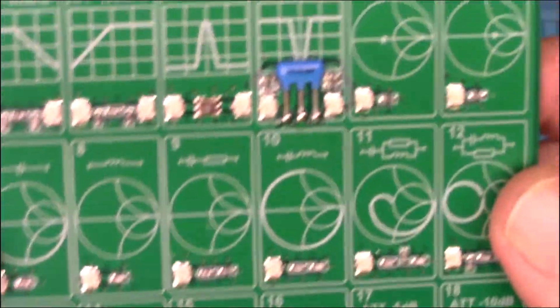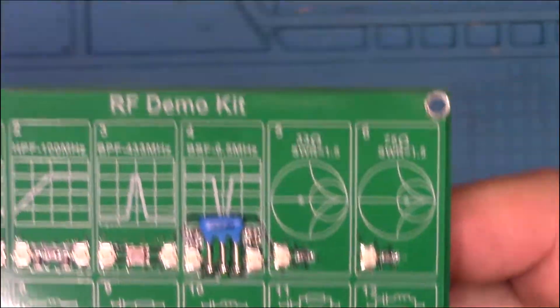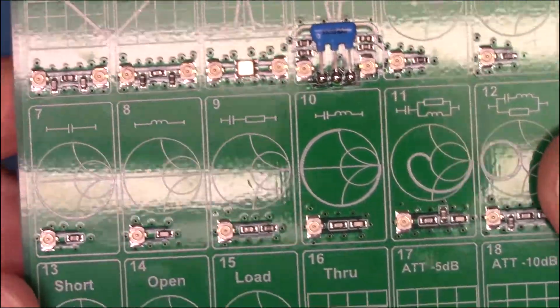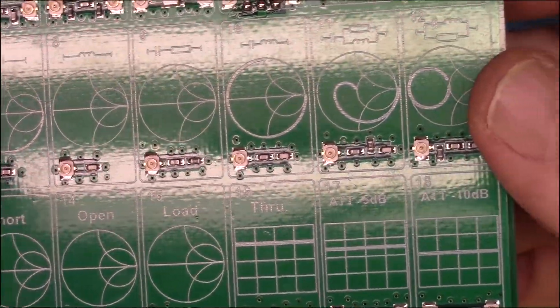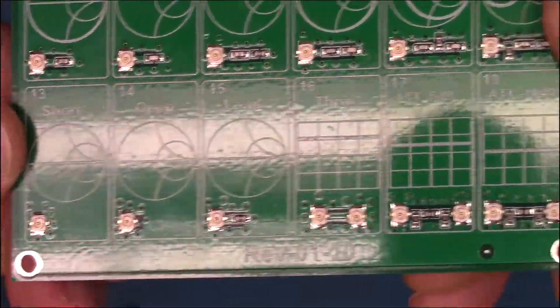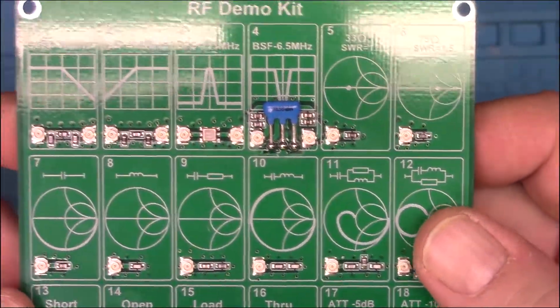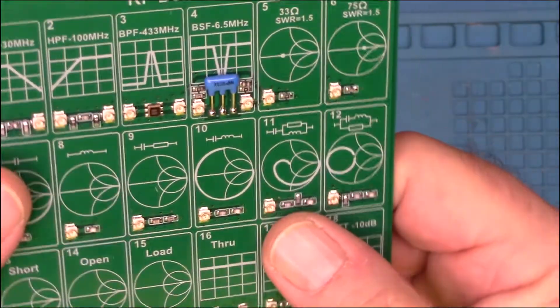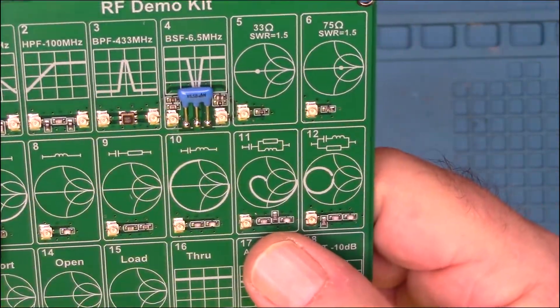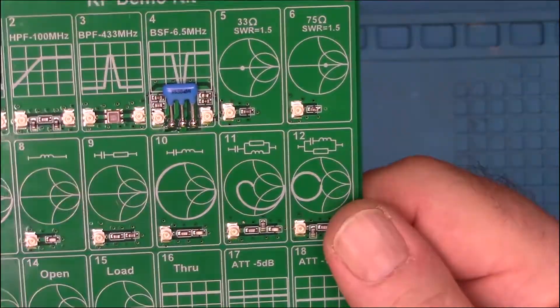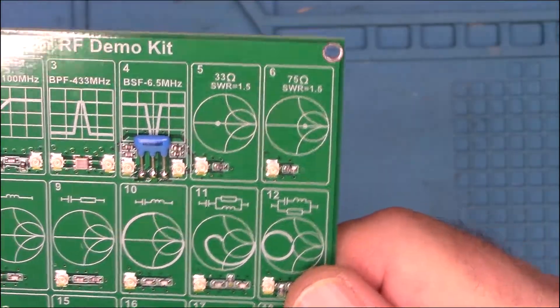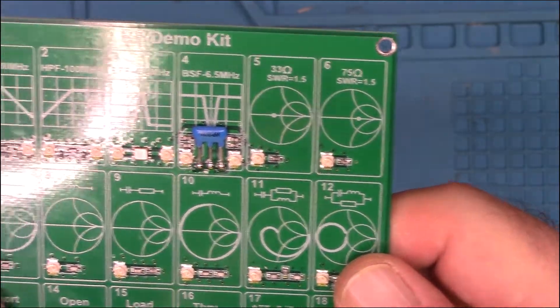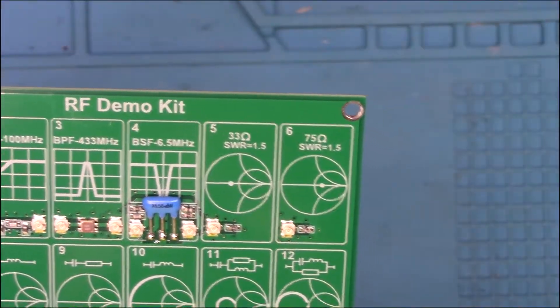So anyway, the construction of the board looks really good. It's clean. The solders are very clean. So whoever put this together did a good job. I have no beefs with the way this board is constructed. So anyway, I will pause the camera here and then let's jump over to the spectrum analyzer and take a look at some of these functions on this little RF test board.